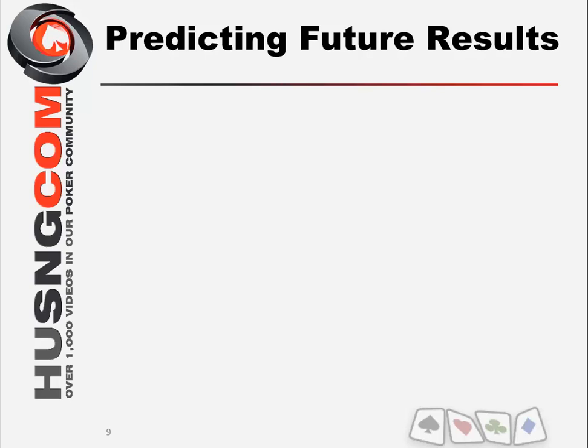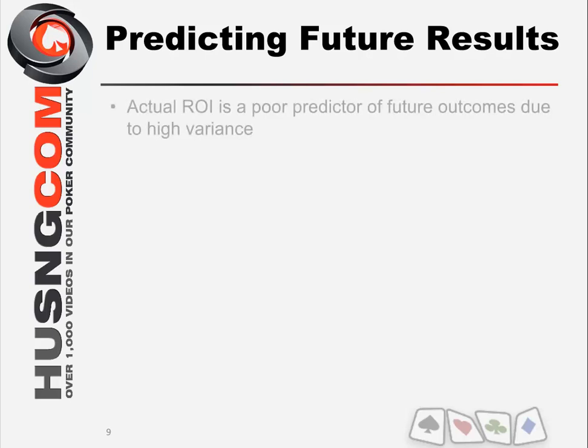Let's talk about predicting your future results — how can we understand how we're going to be doing based on how we've done in the past? With a high-variance format, you start running into issues where your actual results, even over pretty big samples, will be terrible predictors of future outcomes. For example, if you hit a $90,000 prize pool and win it, you'll suddenly have a massive ROI.